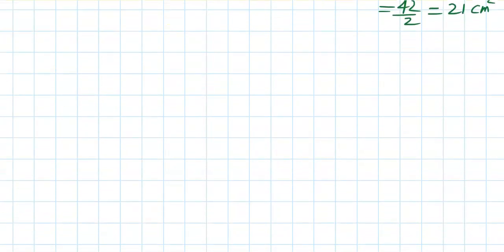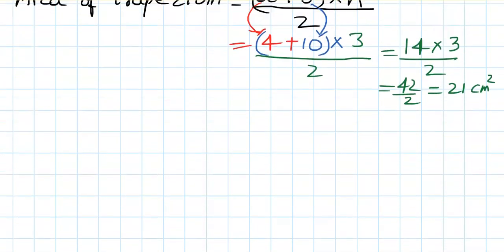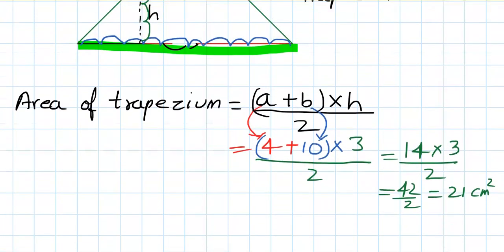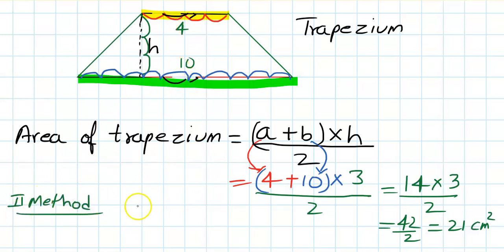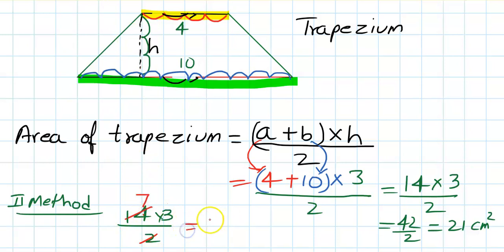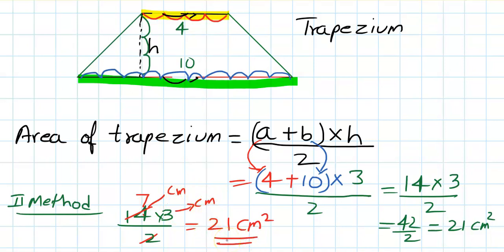Is there another method? Yes. You can add 10 plus 4 mentally to get 14, times height 3, divided by 2. Cancel: 14 divided by 2 is 7, and 7 times 3 is 21 centimeter square. The unit is centimeter square because you are multiplying centimeter times centimeter. This is how we find the area of a trapezium.